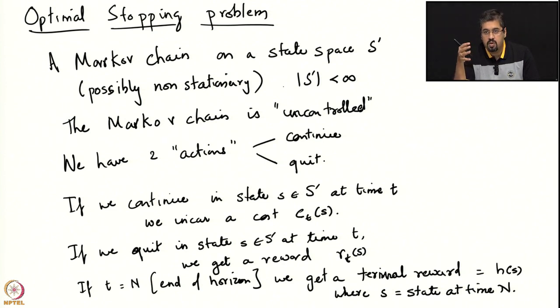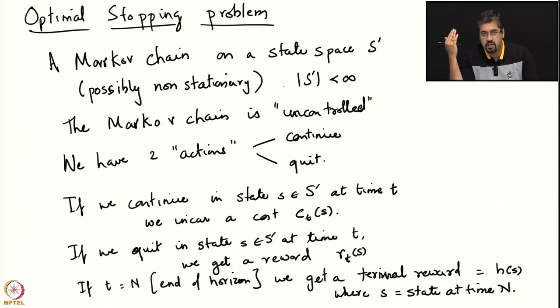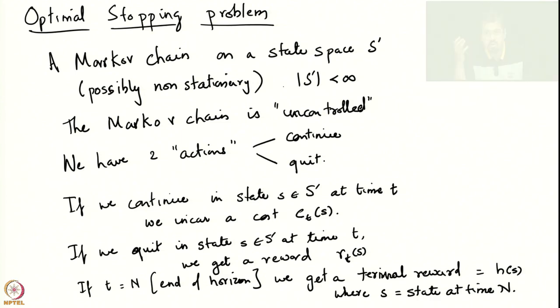It is very clear that this problem setting has an application to finance. In financial assets, it is common to encounter a situation where you have bought an asset and its price keeps varying — maybe the price varies as a Markov chain — and at every stage you need to ask yourself whether you are going to continue to hold the asset or book profit and take home the reward. In assets such as options, there is a finite time horizon by which you need to book out, otherwise the option becomes worthless. That kind of problem models a finite time horizon problem with a terminal reward or terminal cost.